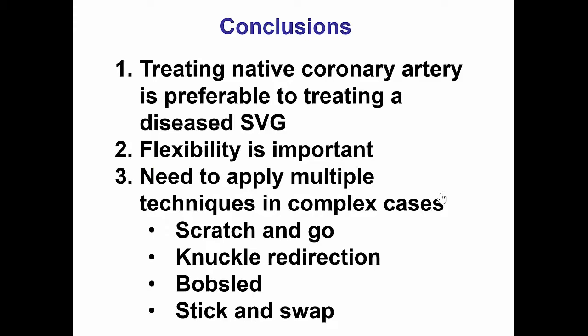There are several potential lessons from this case. The first is that treating the native coronary is preferable to treating a diseased saphenous vein graft. An alternative approach would have been to go into the graft and deploy covered stents; however, multiple covered stents would have been needed, and the long-term patency of this very diseased graft would likely be poor.